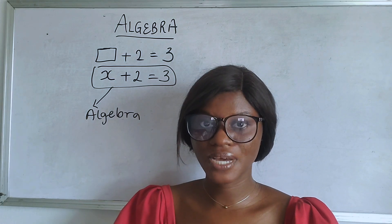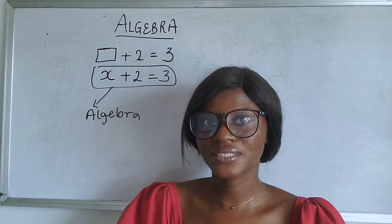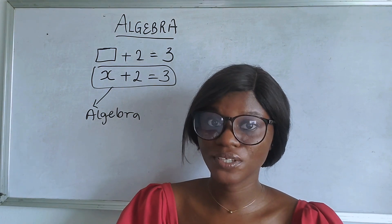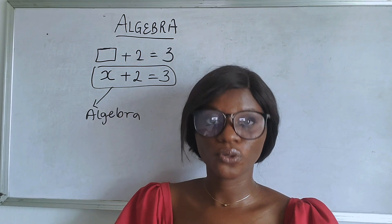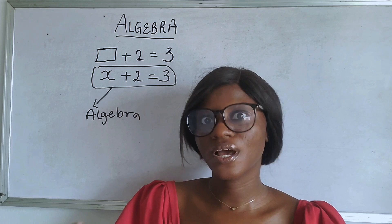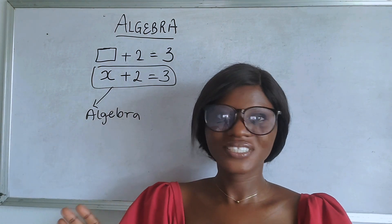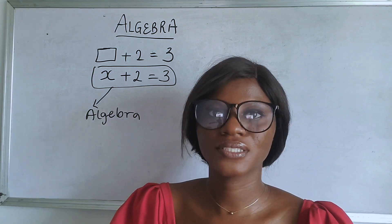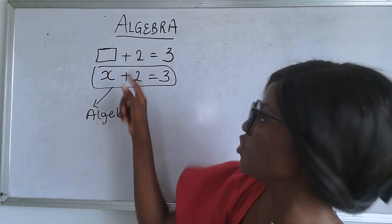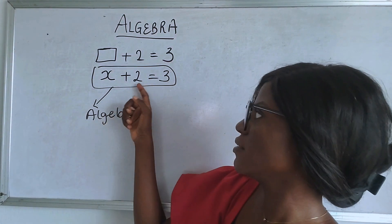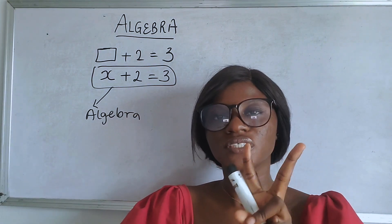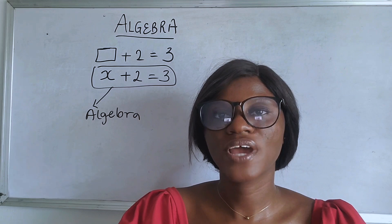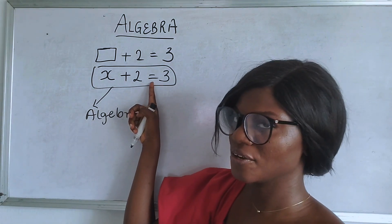Algebra is all about getting the unknown. You could say algebra is a branch of mathematics that helps us to express problems as mathematical expressions or equations. Don't worry - you're going to know the difference between an algebraic expression and an algebraic equation as we go further. We know this is called an algebraic equation because there's an equation sign.